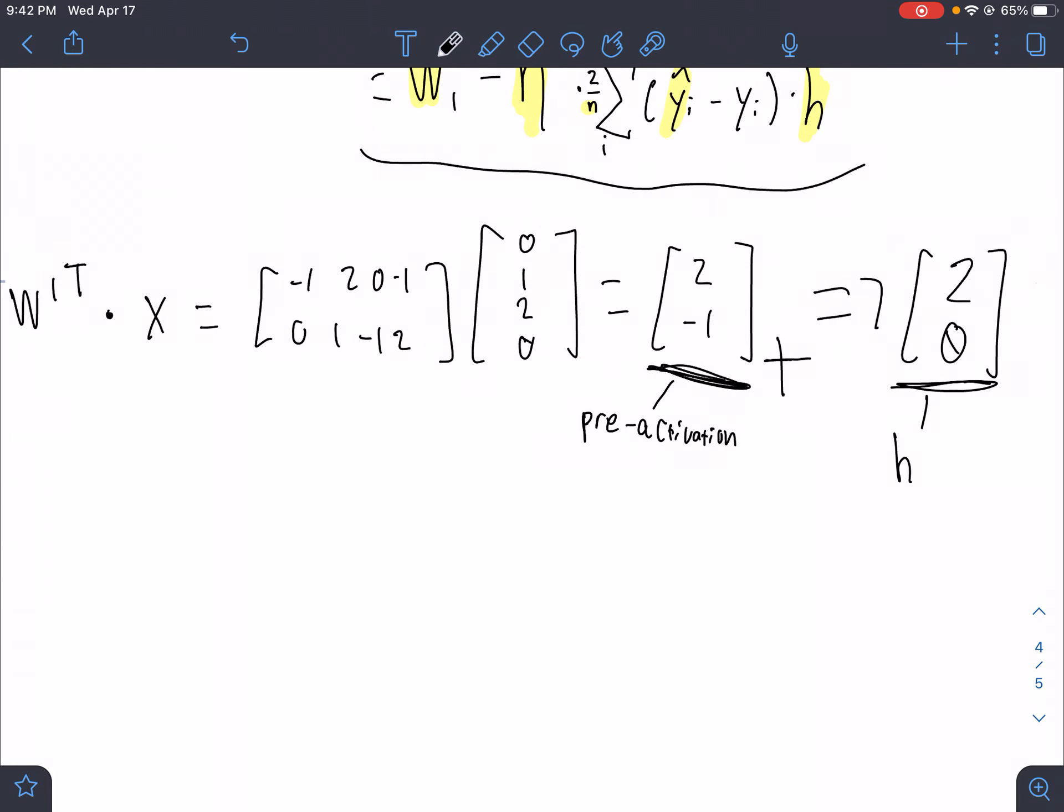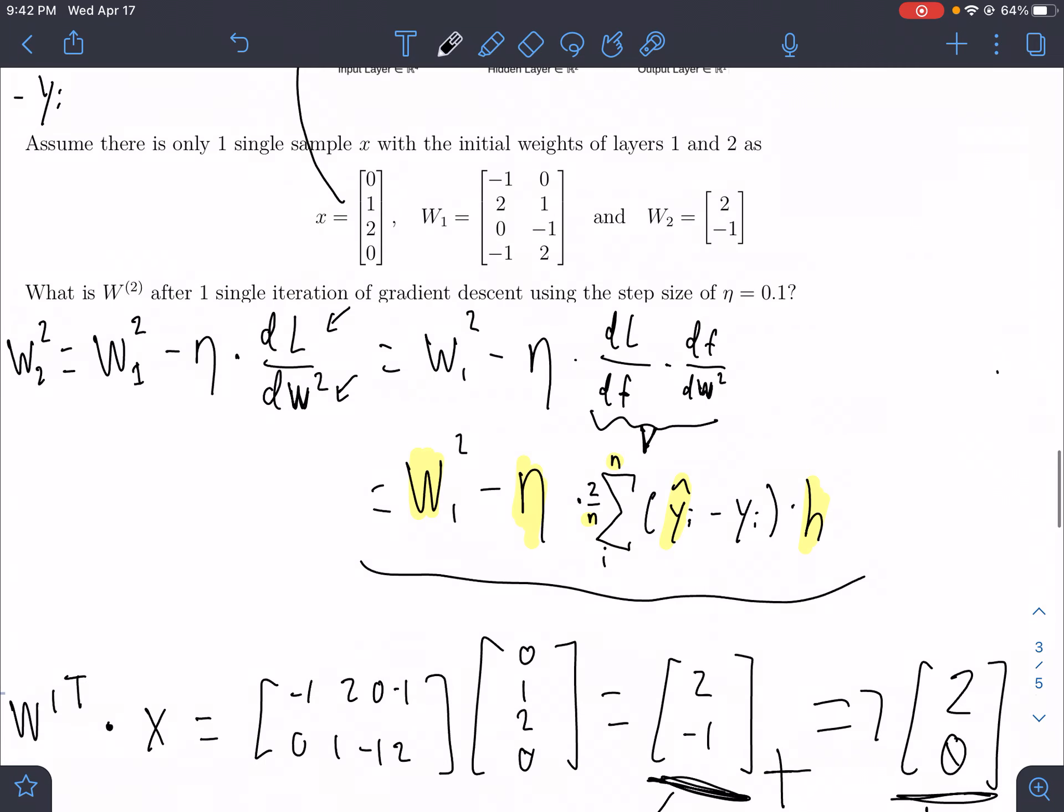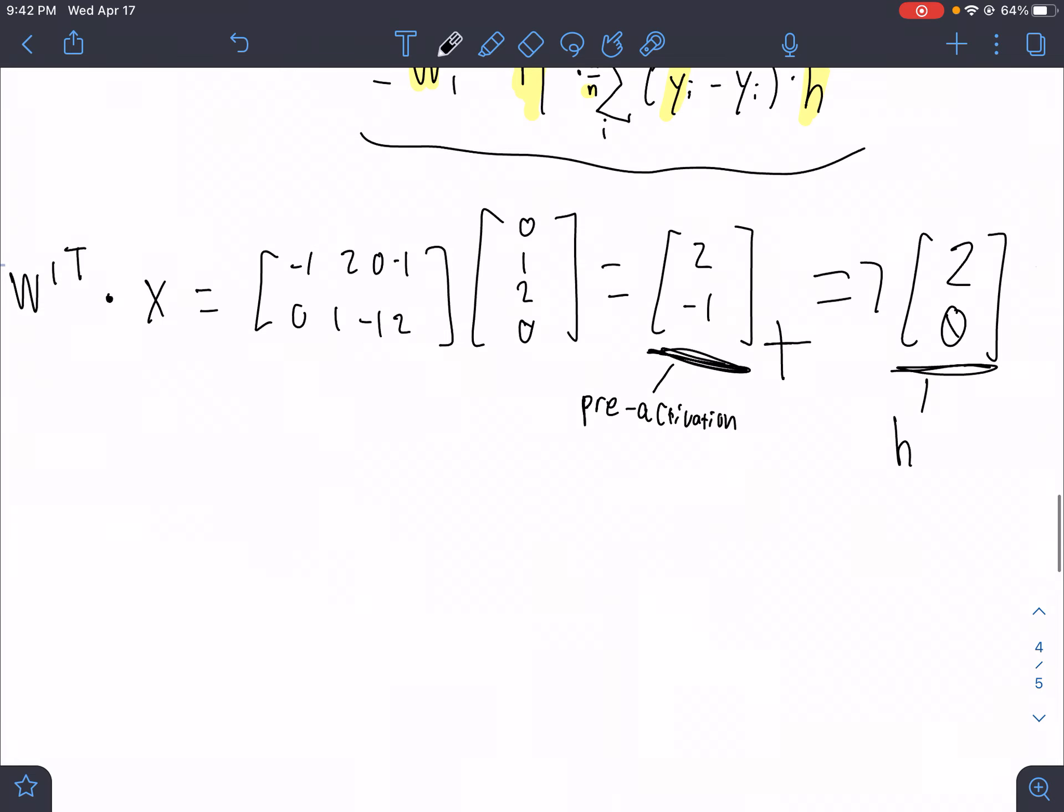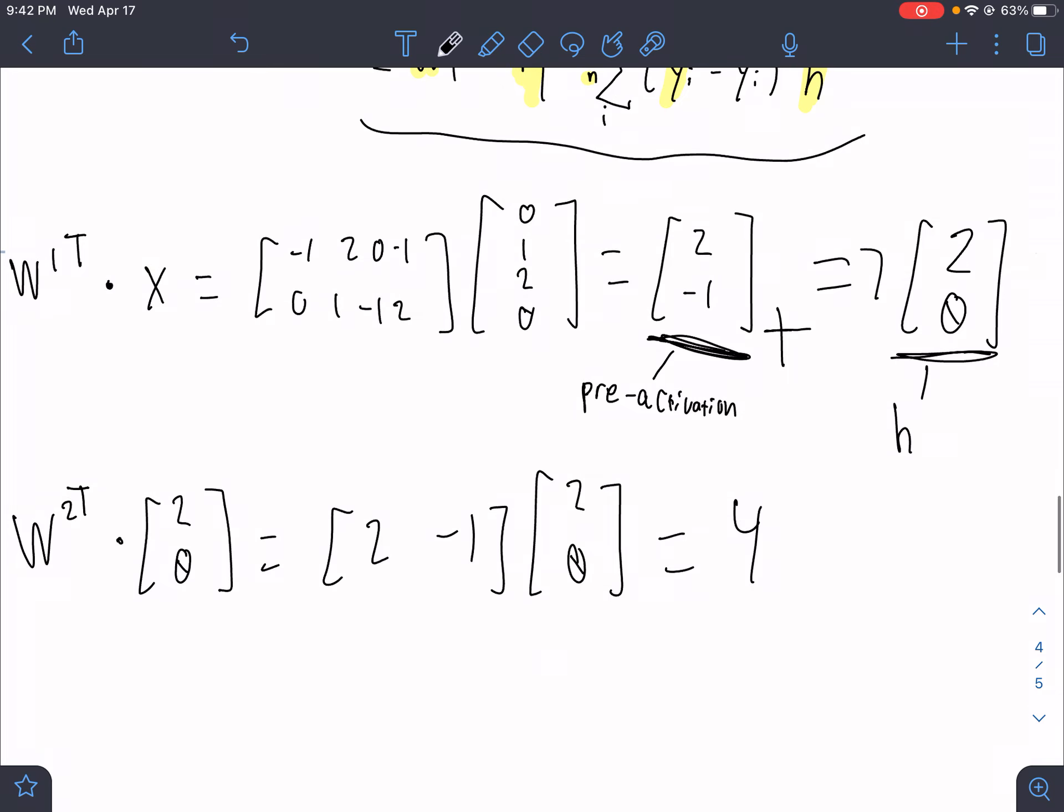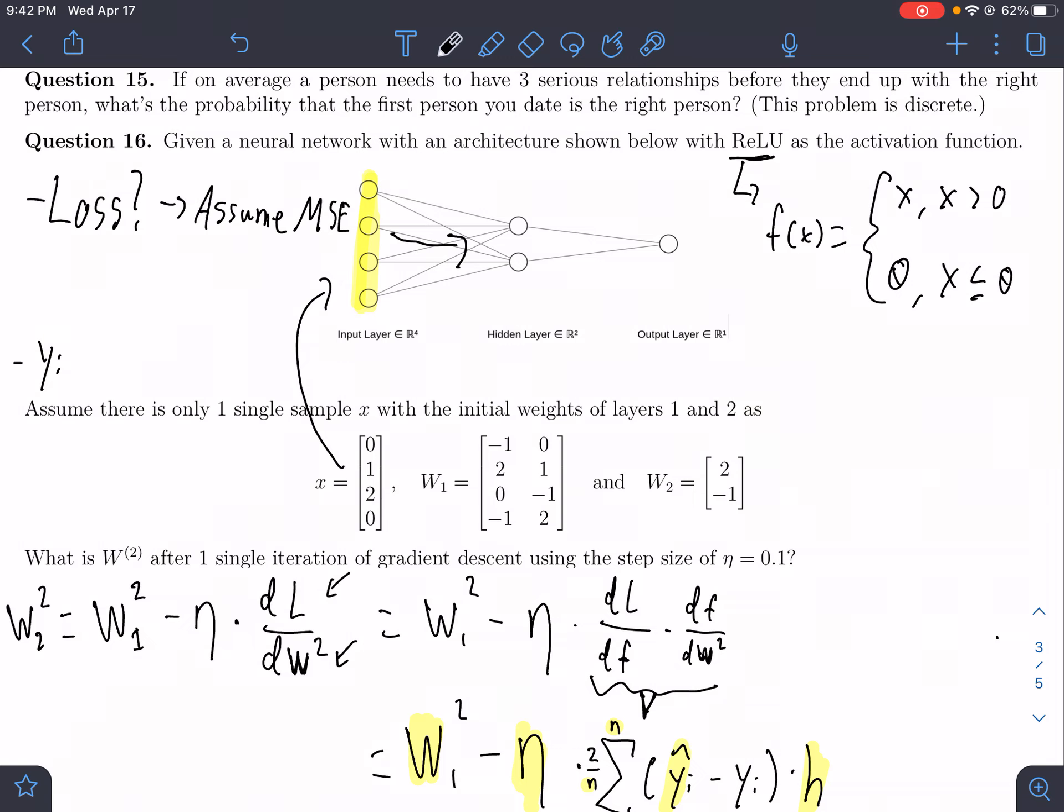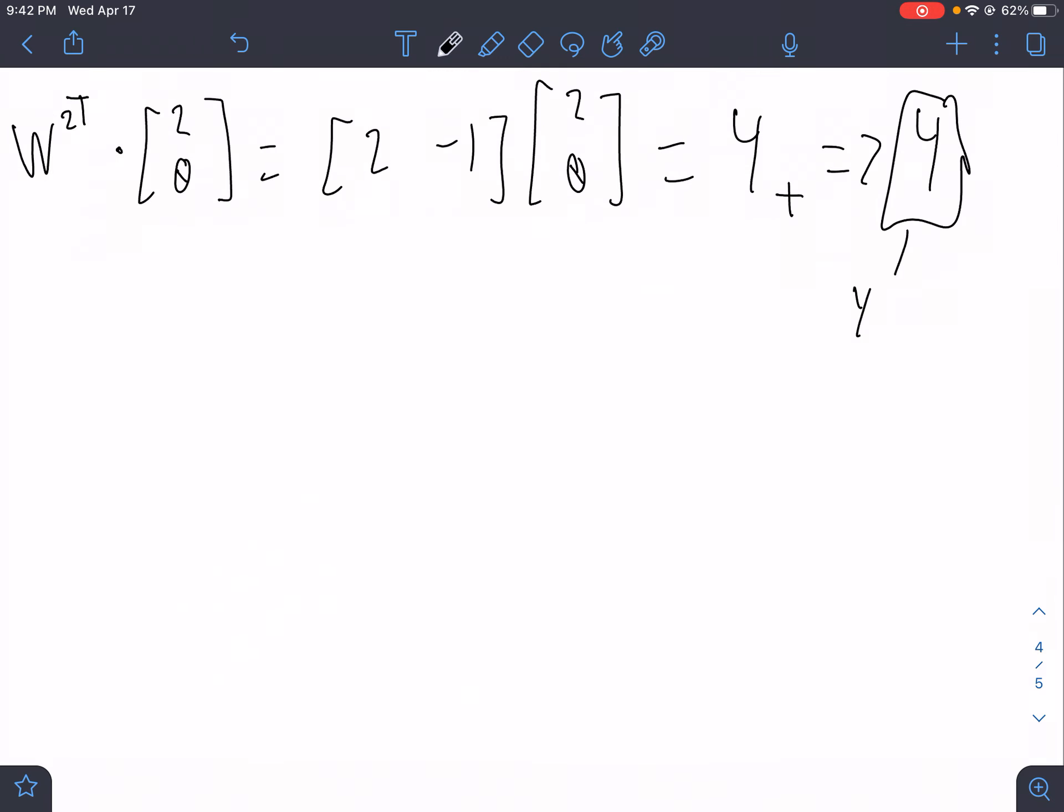Now that we have this, we've passed our data through our first layer. We've gotten through our first layer, and now we need to move to our second layer. Our input to our second layer is 2, 0, because it's h. Our weights for our second layer, we're given them, 2, negative 1, 2, 0. This gives us 4. This is our pre-activation value, so we apply our activation function and get 4. This is our output value, or you might recall this being y hat.